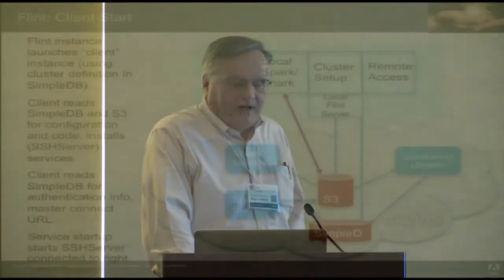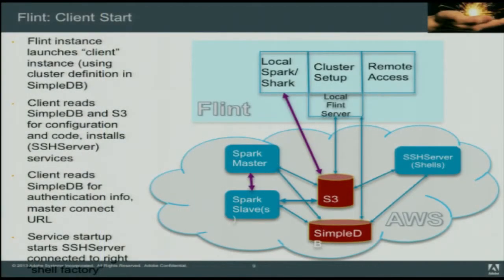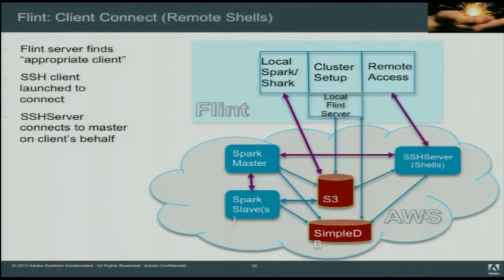To start a client, the user says they want to launch a client of a particular flavor — for example a Spark shell, a Shark shell, or a Shark server. The client goes through pretty much the same sequence, ending up starting an SSH server. Before it starts, it reads SimpleDB for the authentication information and the master connect URL it's going to use. The client then says it would like to connect to the remote shell. Flint finds the appropriate client, the SSH client is launched to connect to it, and then the SSH server connects to the master on the client's behalf.